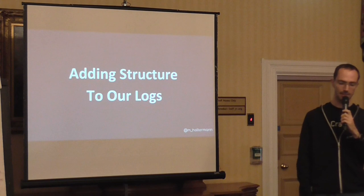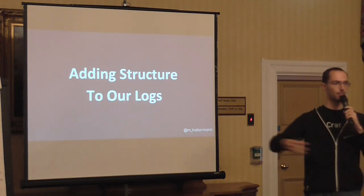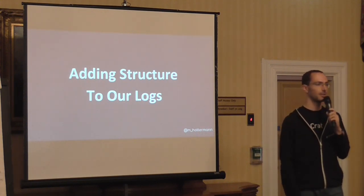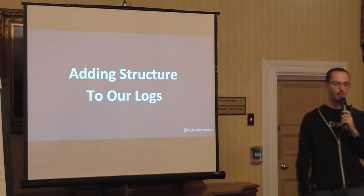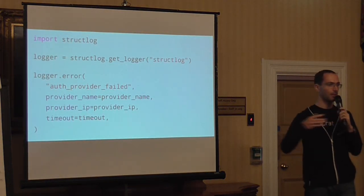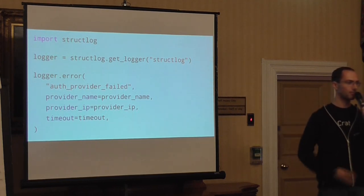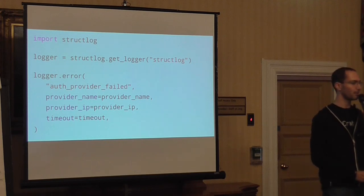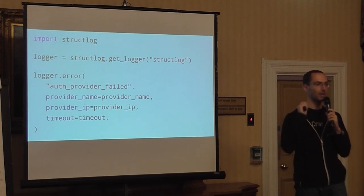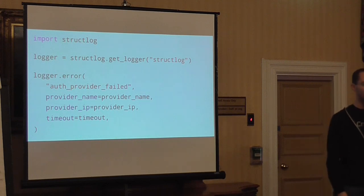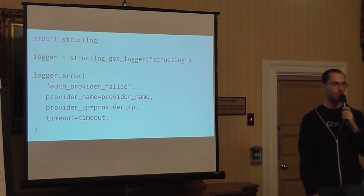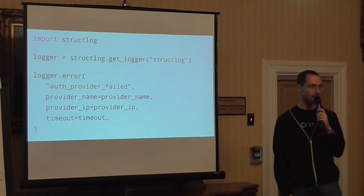Instead of logging this prose-style plaintext message where you need to know English to understand and derive the meaning, maybe we should do something like this. Instead of sending a whole text of prose to bring some information across, maybe reduce that to an action, to an event, whatever you want to call it, and provide a whole bunch of additional information that we have at hand at that point. There's a Python library called structlog which provides an interface exactly for that.